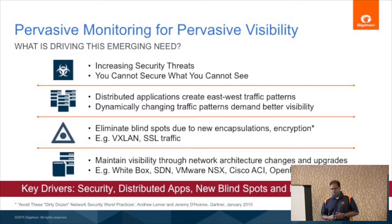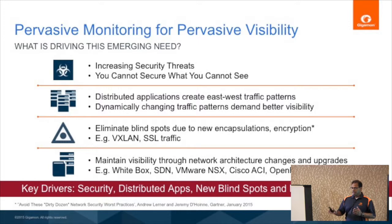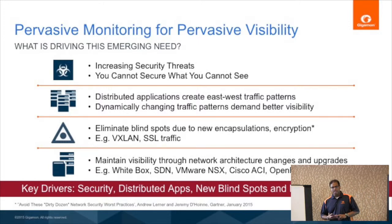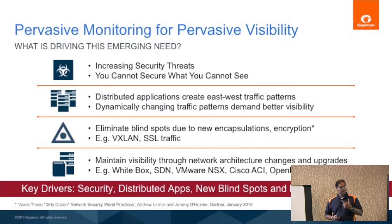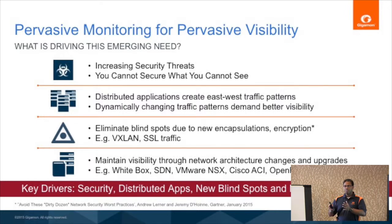Those are some of the blind spots you might need to monitor. As new technologies evolve — the white box, SDN, VMware NSX, Cisco ACI — how do you get pervasive monitoring for these new technologies? To summarize the key drivers: security, distributed apps, blind spots with encryption and encapsulation. And as you migrate from 10-gig to 40-gig networks, how do you maintain visibility and preserve your tool infrastructure through these upgrades?